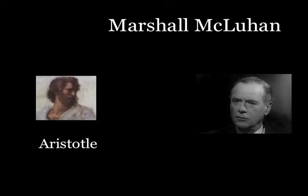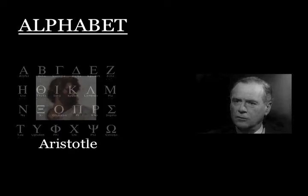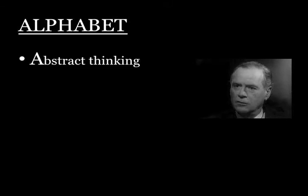McLuhan would explain that Aristotle and the system of logic he codified were products of a culture radically transformed by the introduction of the Greek alphabet. The alphabet encouraged the separation of the knower from the known, allowing the products of the mind to be viewed and reviewed, providing the critical distance that brings objectivity and objectification. Writing takes discourse out of its concrete situation in space and time, and this decontextualization opens the door to high-level abstractions and abstract thinking.